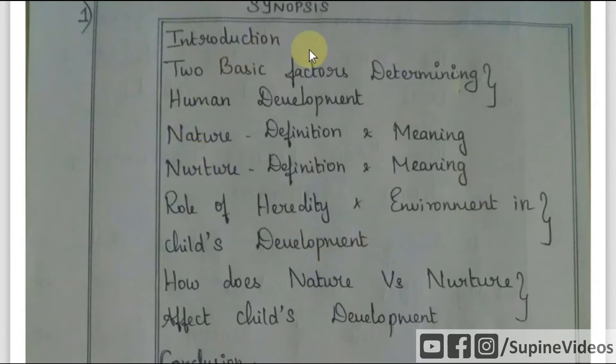Now we will do a synopsis. If you have a full course, you will do a synopsis. Synopsis means you will put the heading and the answers. How do you handle the external examiner? You will do a correction. If you have the points, you will get the answers in the first view. So we will do the synopsis.